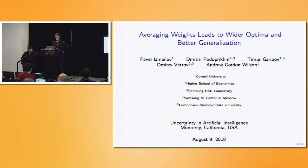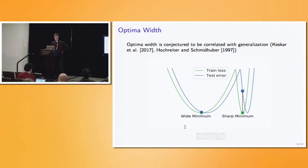I'll present our joint work with Dmitry Padaprihin, Timur Garipov, Dmitry Vetrov, and Andrew Gordon Wilson. Averaging weights leads to wider optima and better generalization. In this talk, the concept of optima width, as in the previous talk, would play a really important role.